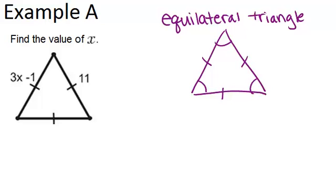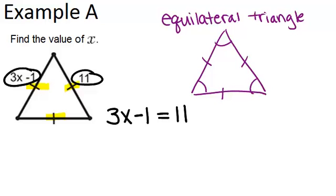So in example A, it says find the value of x. And it's marked that all three sides are the same length, so this is an equilateral triangle. Now because all three sides are the same length, it means that 3x minus 1 must be equal to 11, because they're both sides of the triangle. So we can set up an equation, 3x minus 1 equals 11, and solve that equation in order to solve for x.